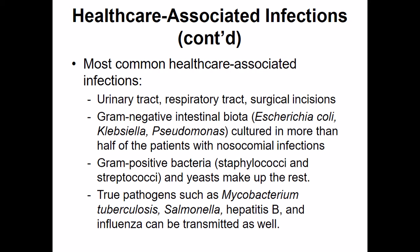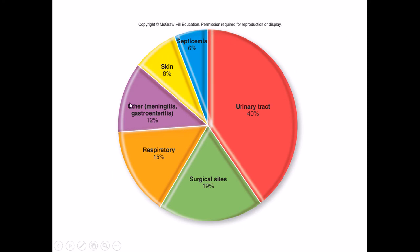If we look at hospital-related infections, they're going to be limited to approximately six different genera: E. coli, Klebsiella, Pseudomonas, Staphylococci, Streptococci, and Candida. We will also have some true pathogens like Mycobacterium tuberculosis, Salmonella, hepatitis B, and influenza being transmitted as well, but those are the exceptions. UTIs are by far the largest category of nosocomial infections; respiratory infections and surgical incision sites round out the top three, and these three categories make up approximately 75% of all nosocomial infections.